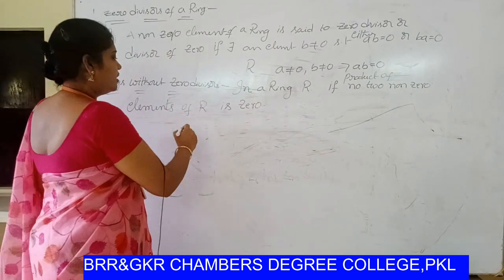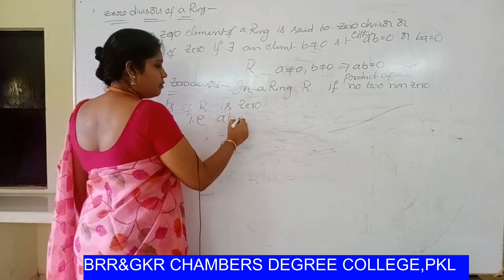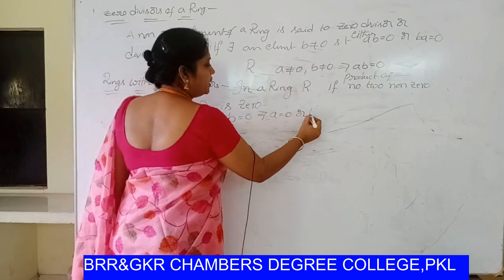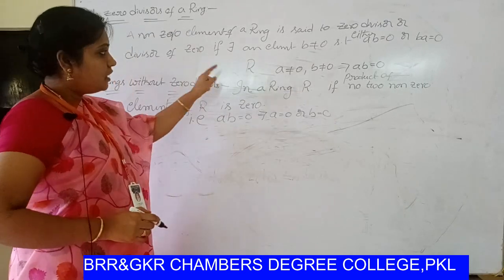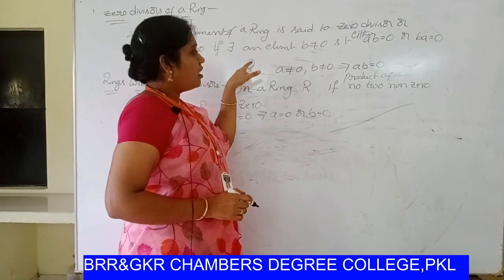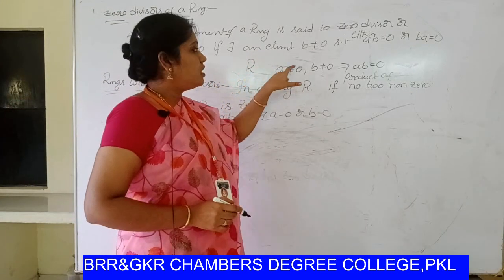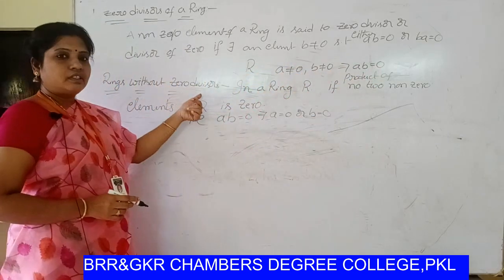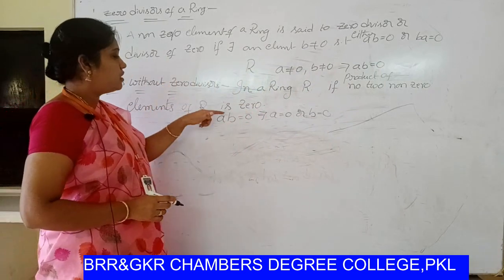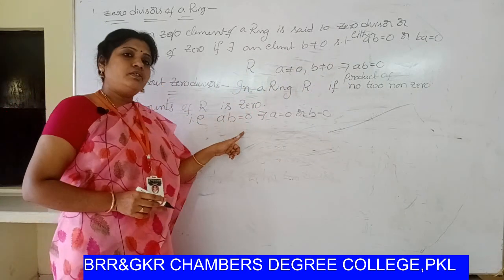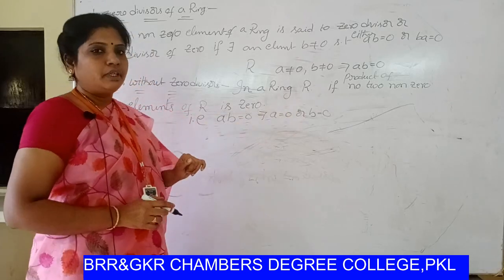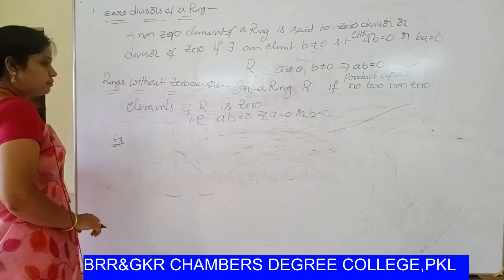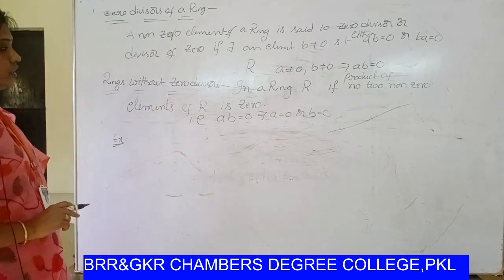The product of no two non-zero elements of R is zero. That means if ab equals zero, it implies a equals zero or b equals zero. If R has zero divisors, there exist two non-zero elements whose product is zero. R has no zero divisors means: if ab equals zero, then a equals zero or b equals zero. I give one example of a ring without zero divisors.